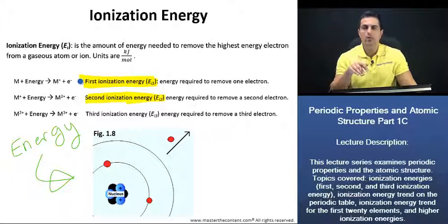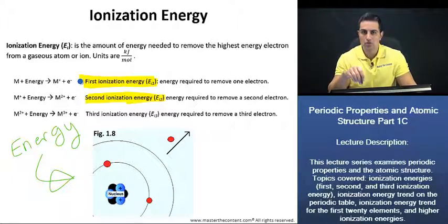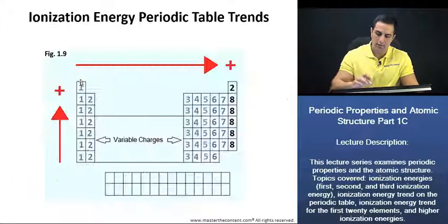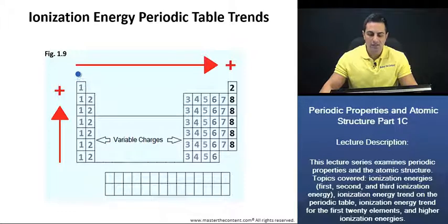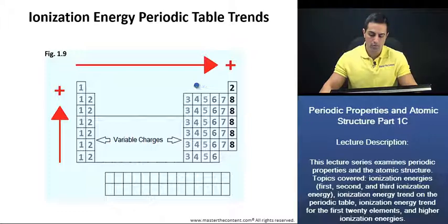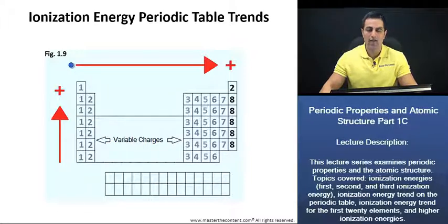Next, what we should do is point out the ionization trends and examine them on the periodic table and explain as to why they exist as they do. Looking here at figure 1.9, we see that the ionization energy trend increases going from the left to the right on the periodic table. Furthermore, it increases up a group, as you see here as well. Let's go ahead and explain this trend first as to why it increases across the period, then we can take a look at why it increases as we go up a group.